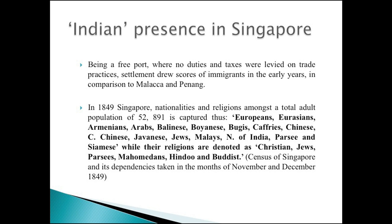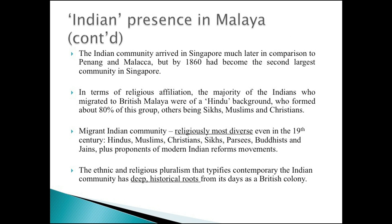Already by the middle of the 19th century there was a great deal of ethno-linguistic, regional, national and religious diversity within not just the Indian community but the Singapore population as a whole. The Indian community arrived in Singapore later than in Penang and Malacca, but by 1860 it had become the second largest community after the Chinese, having displaced the Malay community. In terms of religious affiliation, the majority of Indians who migrated to British Malaya came from a Hindu background — Sandhu suggested around 75-80% — with the rest constituted by Sikhs, Muslims and Christians. Indians constituted religiously the most diverse community among those migrating to Singapore.